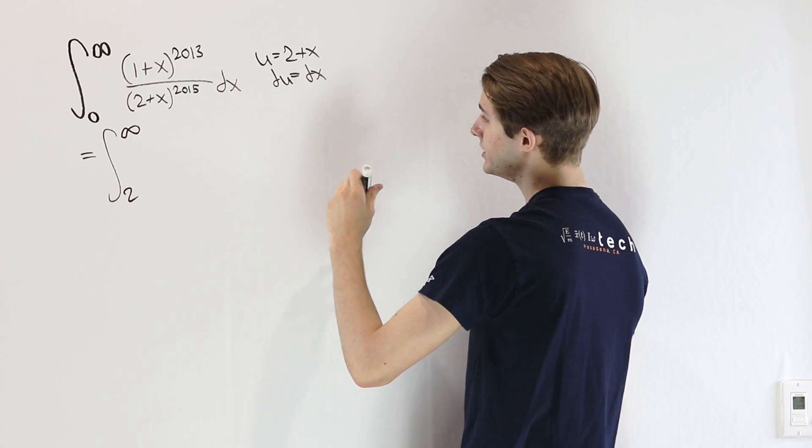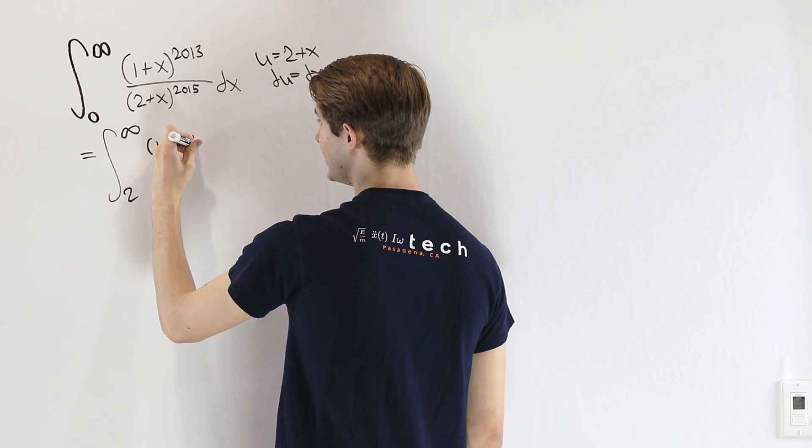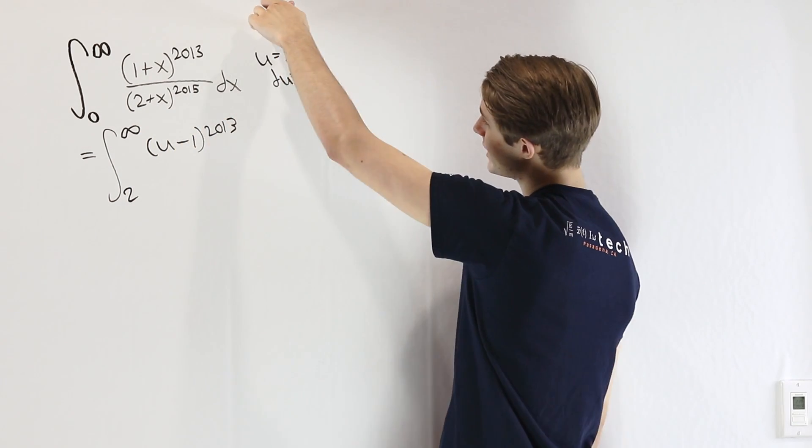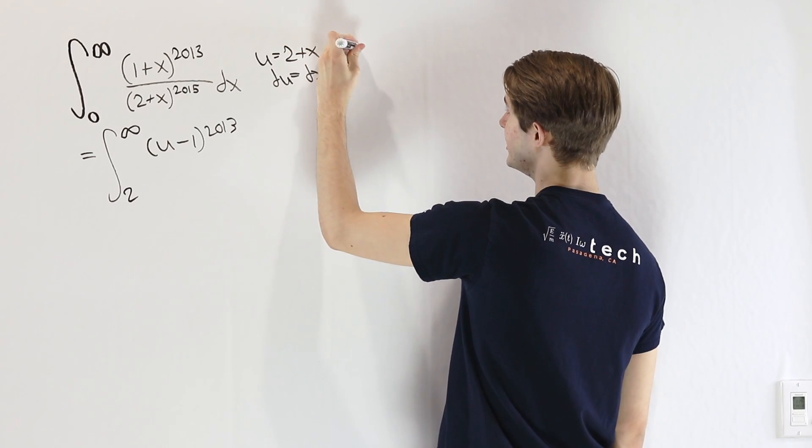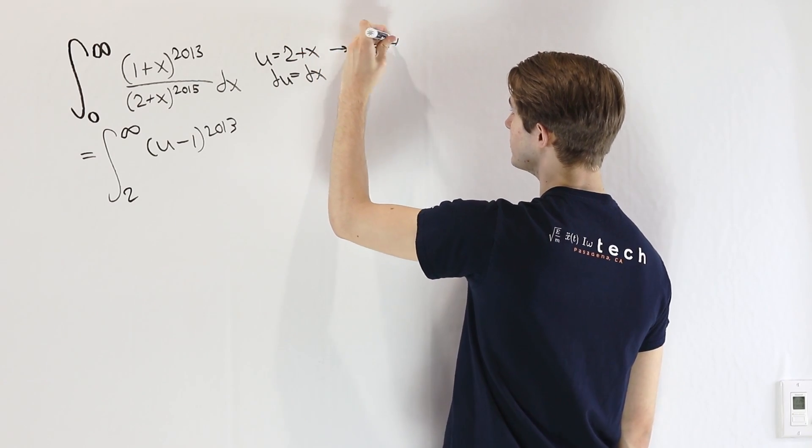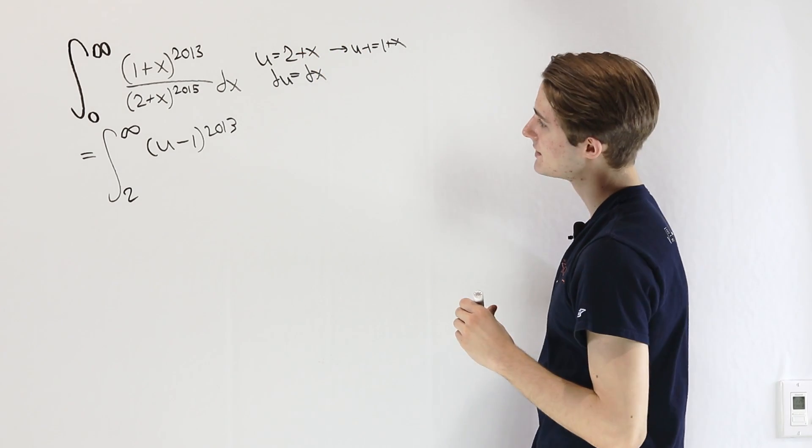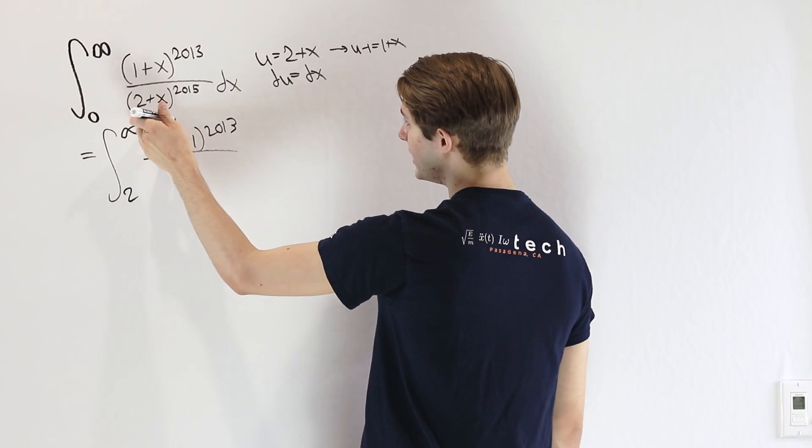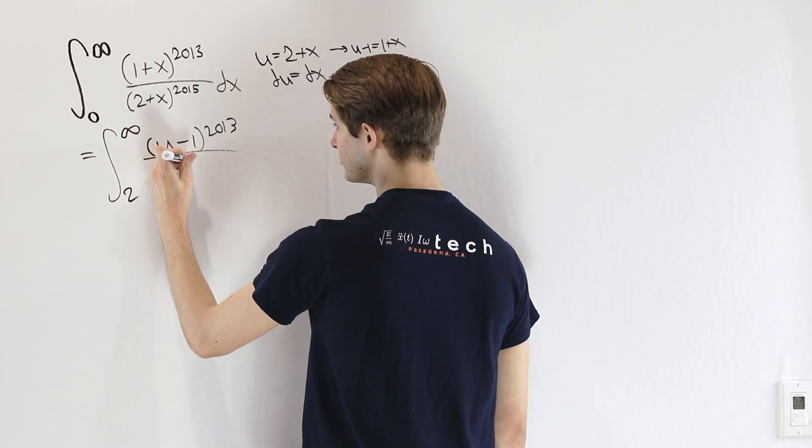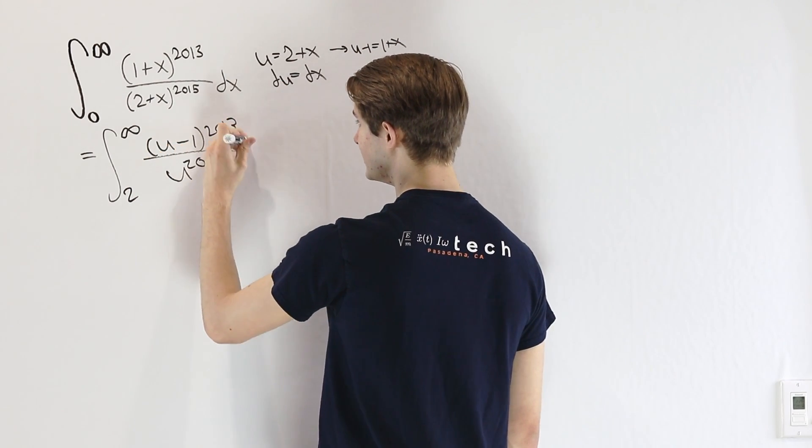1+x is going to be u-1. And you can see that if you subtract 1 from both sides of this equation, u-1 equals 1+x, just like that. From there, we can divide by 2+x is u. So we have u^2015 times du.